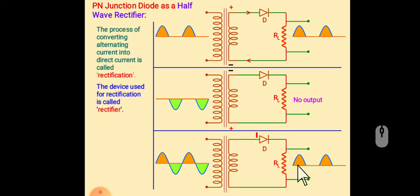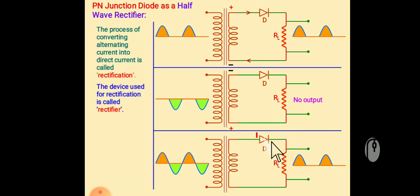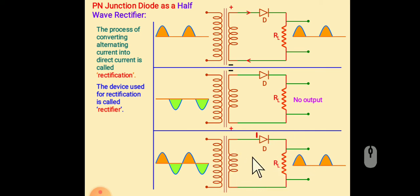So what is rectification? Rectification is the process by which an alternating current is converted into direct current. This is called rectification. And the device which converts alternating current into direct current is called rectifier. This is called half-wave rectifier.